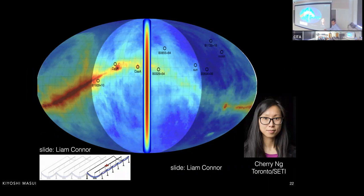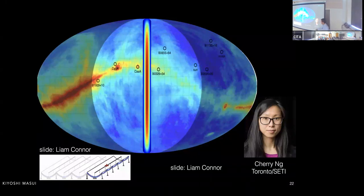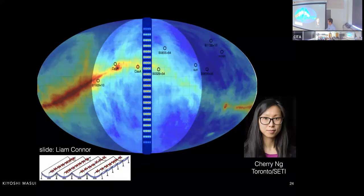CHIME does have a big mirror, but it only focuses the light in the east-west direction and is flat in the north-south direction. Any antenna placed along the focal line sees a broad swath of the sky essentially horizon to horizon in the north-south direction. But there's a whole line of antennas at this focal line, so we do beamforming in the north-south direction for both sensitivity and spatial information. And there are four such cylinders, enabling an additional stage of east-west beamforming.